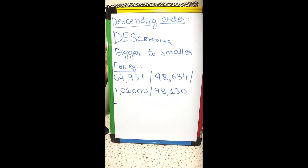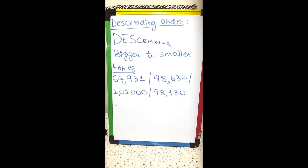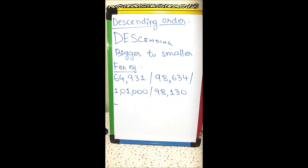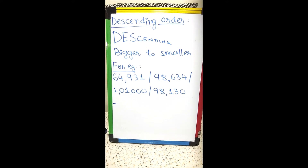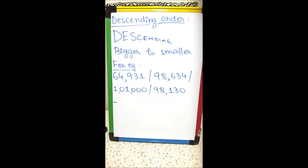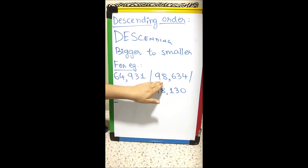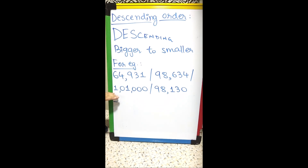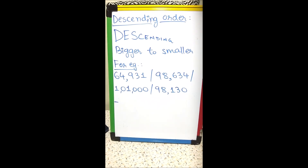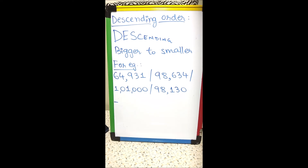Now let us look at descending order. Descending order means arranging numbers from bigger to smaller, so the bigger number comes first. The numbers are: 64931, 98634, 1,01,000, and 98130.